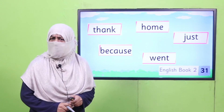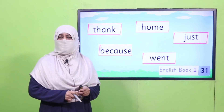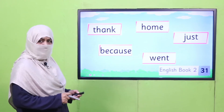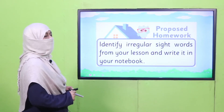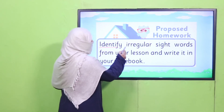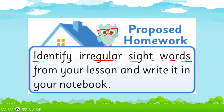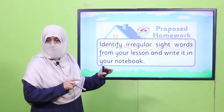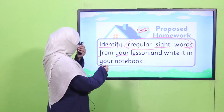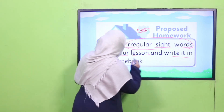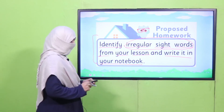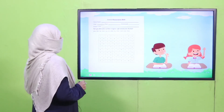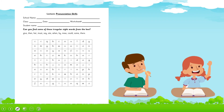Are you done with the practice? Good job! So those were the sight words for today. Now it's time for your homework. What you are supposed to do: identify irregular sight words from your lesson — words in your lesson that don't follow the regular spelling pattern. You will find them, list them, and write them in your notebook. This is your homework.